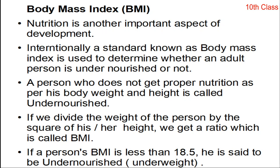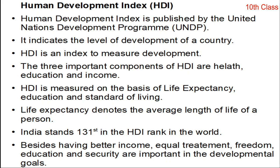If we divide the weight of a person by the square of their height, we get a ratio called BMI — Body Mass Index. If a person's BMI is less than 18.5, that person is said to be undernourished or underweight and needs better nourishment.